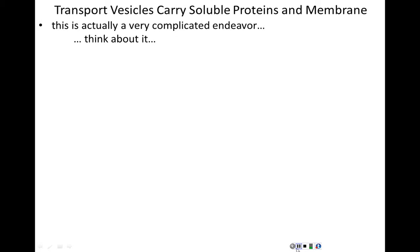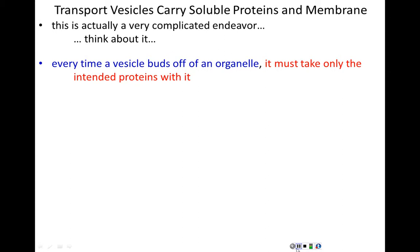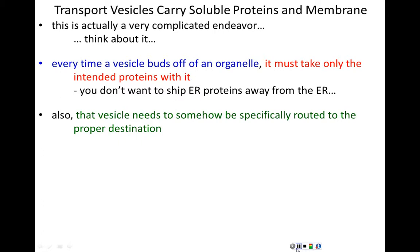Everything we're describing sounds simple, but it's actually very complicated. Every time a vesicle buds off of an organelle, it must carry only the proteins that are supposed to be in that vesicle and nothing else. There are plenty of proteins in the endoplasmic reticulum that belong there and should not be shipped off. How do we keep those proteins out of these vesicles and make sure only the intended cargo is shipped? That's challenge one.